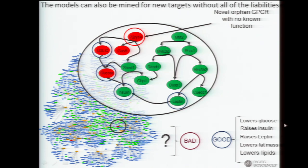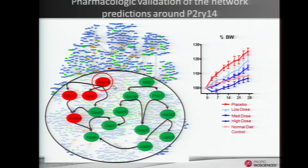Based on that information, we did a targeted in vivo validation to validate that finding. A drug was developed targeting P2RY14 — it's an orphan GPCR. Here are the results: animals on a high-fat diet over a four-week period, percent weight gain over baseline. Here are animals on placebo, then low, medium, and high dose of the drug. At high dose, they're looking better than the animals on a normal lean diet. This also reduced lipids and reduced glucose levels — a lot of positive benefits predicted from the network. And it's an example that went all the way to the drug.